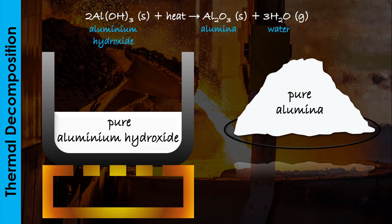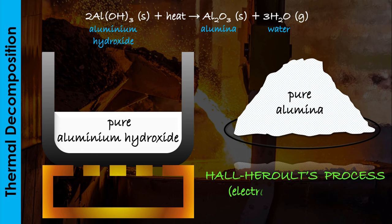The aluminium oxide is then used for the next part of the extraction process, which is the electrolysis of alumina, also known as the Hall-Heroult process.